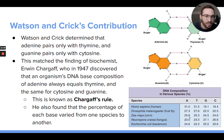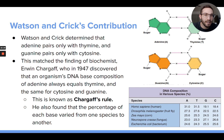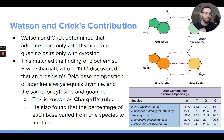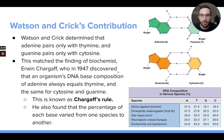Watson and Crick used that information to confirm that adenine always pairs with thymine, and guanine always pairs with cytosine, which causes these base percentages to always be similar — because wherever there's an adenine, there's always a thymine connected to it, and wherever there's a cytosine, there's always a guanine connected to it. That is Chargaff's rule: the percent of A and T in a DNA molecule is always the same, and the percent of G and C is always the same.